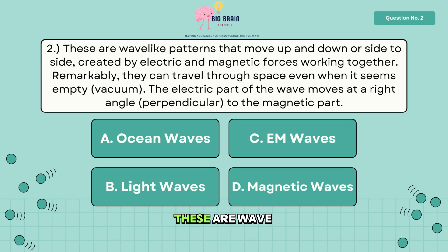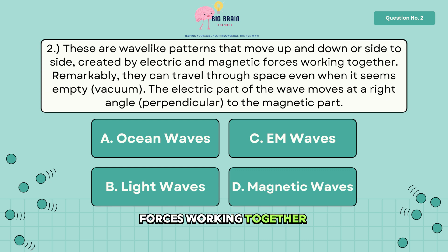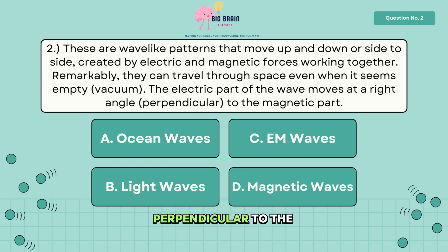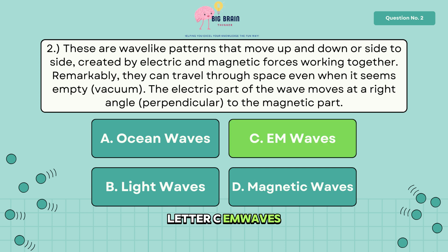Two, these are wave-like patterns that move up and down or side to side, created by electric and magnetic forces working together. Remarkably, they can travel through space even when it seems empty. The electric part of the wave moves at a right angle perpendicular to the magnetic part. The answer is letter C, EM waves.